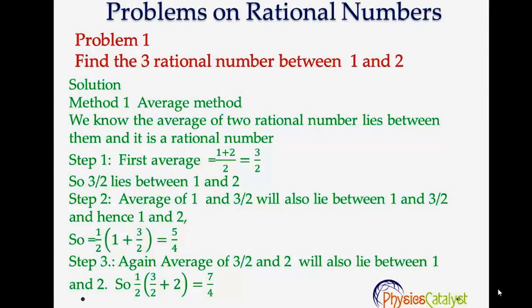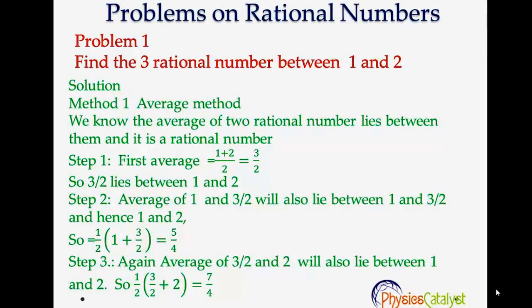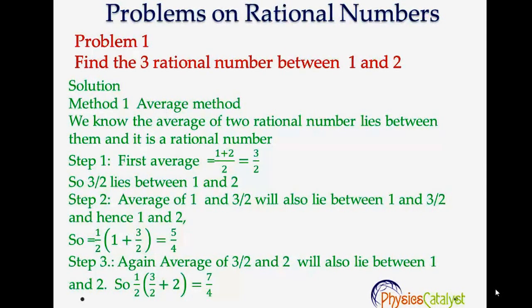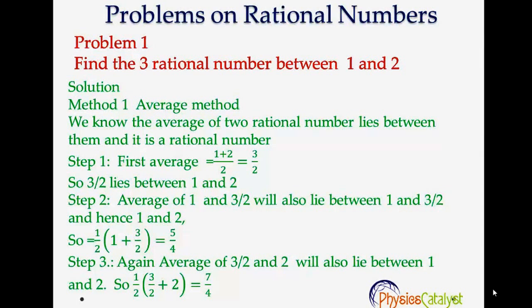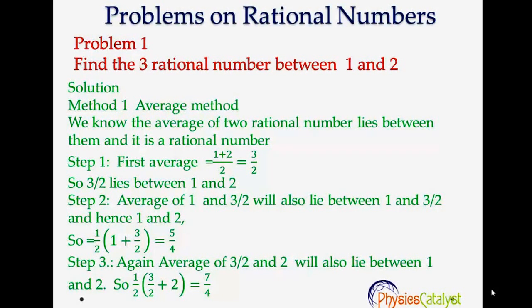First method, called the average method. The average of any two rational numbers is a rational number and it lies between those two rational numbers. Step 1: Find the average of 1 and 2. That will be equal to 3/2. So 3/2 lies between 1 and 2.